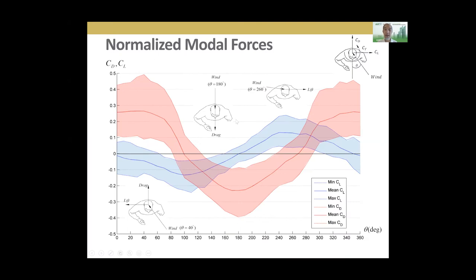Looking at the results, the force normal to the face of the Buddha statue is called drag force, presented by drag coefficient C_D. The force perpendicular to that is called side force, presented by C_L. In this plot, we show C_D and C_L against wind attack angle theta, which varies from 0 to 360 degrees. We present the mean, maximum, and minimum values — upper bound, lower bound, and average — showing how they vary with different wind attack angles.